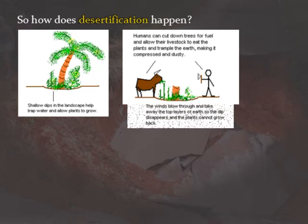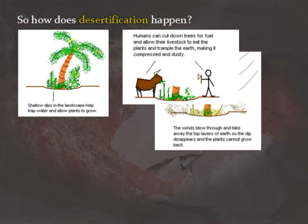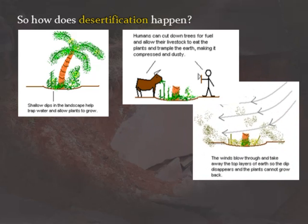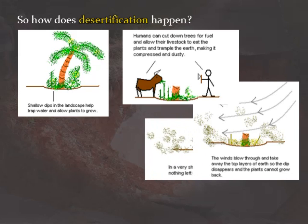Livestock trample the earth, making it compressed and dusty. When the winds blow through, they take away the top layers of earth, so that the dip where the water used to get trapped disappears — it gets shallower until there is nothing left.